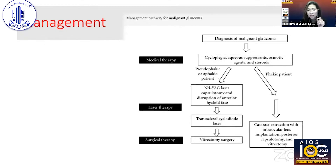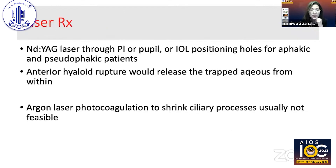If medical therapy doesn't work, the approach depends on whether the patient is phakic or pseudophakic, but the key principle is to make a hole and disrupt the anterior hyaloid face. This is easier in pseudophakic patients. In phakic patients, cataract surgery is usually required. For laser therapy, you need to rupture the anterior hyaloid to release the trapped aqueous — using a Nd:YAG laser through a large peripheral iridectomy, through the pupil, or through the IOL positioning holes in pseudophakic patients.